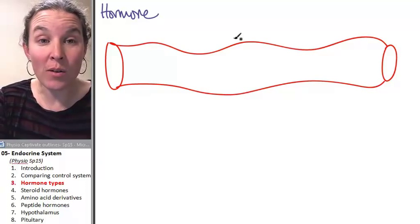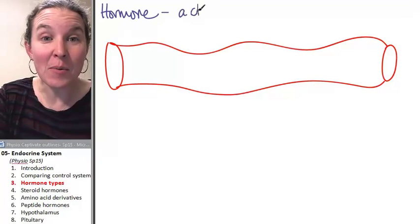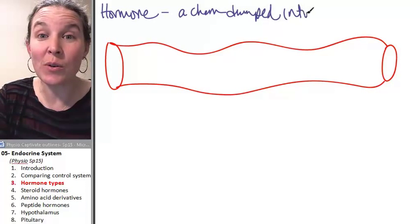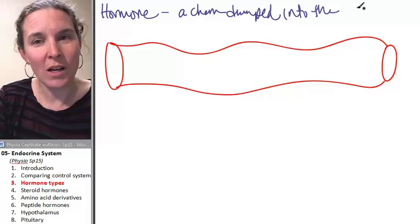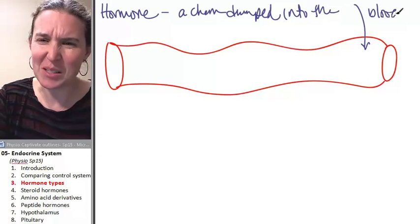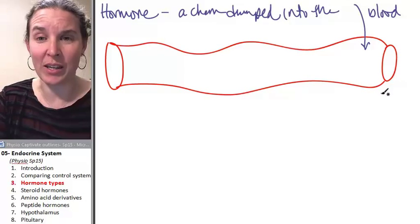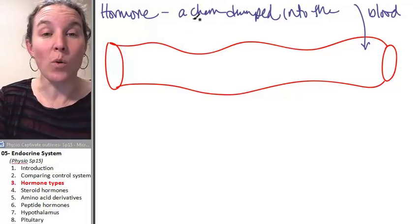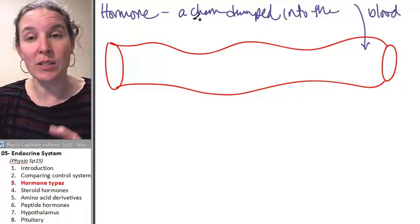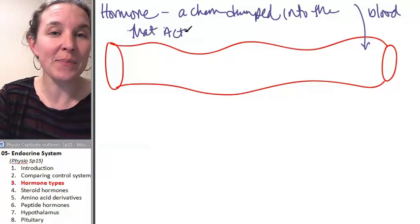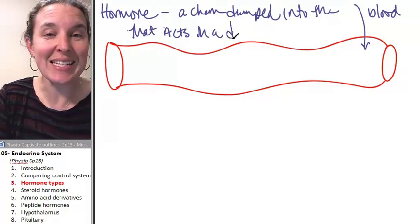The hormone is a chemical dumped into the, now you know what I just drew, blood. That's a blood vessel. This end looks super wonky. But the hormone is any chemical dumped into the blood that acts on a distant target.